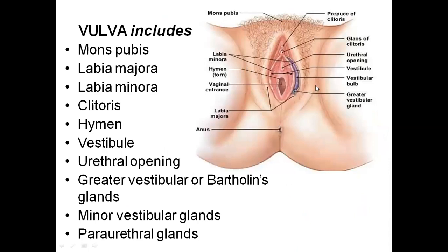The vulva, that is the external genitalia of the female, includes the following parts: mons pubis, the big labial folds which are labia majora, the smaller ones are labia minora, the pointed structure present anteriorly is the clitoris. The opening we have is the hymen, and overall this opening is called the vestibule. Inside the vestibule we find the urethral opening, openings of bulbo-urethral glands, minor vestibular glands, and para-urethral glands. We will discuss the openings in detail when we discuss the vestibule.